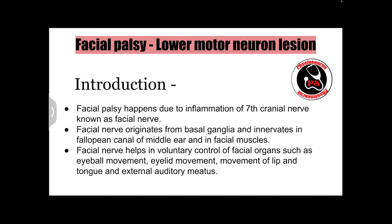Now let's talk about lower motor neuron facial palsy. Facial palsy happens when there is inflammation in the seventh cranial nerve, known as the facial nerve. The facial nerve originates from the brainstem and innervates the fallopian canal of the middle ear and the facial muscles. The full course and relations of the facial nerve are beyond the scope of this video.